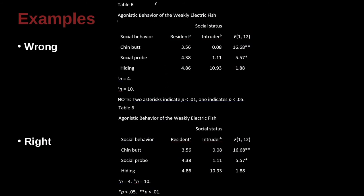Let's take a look at another example, agnostic behavior of the weakly electric fish. So some kind of fish that has electric power, right? So we have our decked example here. Social status, and social status has two parts, resident and intruder. That looks very good.